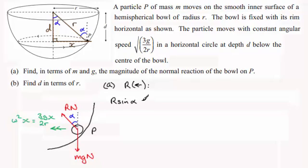That's going to be equal to the mass times the acceleration, which we've seen is 3gx over 2r. Now when it comes to sine alpha, we can see from the triangle, sine alpha equals x over r. So therefore, we have r times x over r equals m times 3gx over 2r.